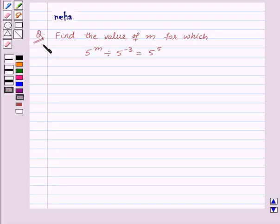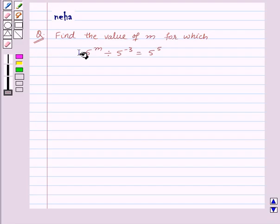Hi and welcome to the session. Today we will discuss the following question. The question says, find the value of m for which 5 to the power m divided by 5 to the power minus 3 is equal to 5 to the power 5.